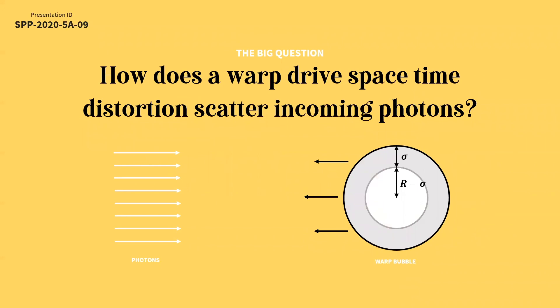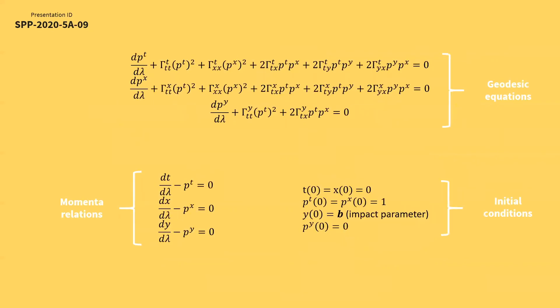Now if we have a beam of photons coming from the negative x infinity and a warp drive from the positive x infinity moving toward each other, the big question is how the warp drive would scatter these incoming photons. And to solve for that, we consider three sets of equations. First, the geodesic equations evaluated about our warp drive. Second, the displacement-momenta relations with respect to an arbitrary variable. And lastly, our initial conditions. In this setup, we call the constant value b as our impact parameter.